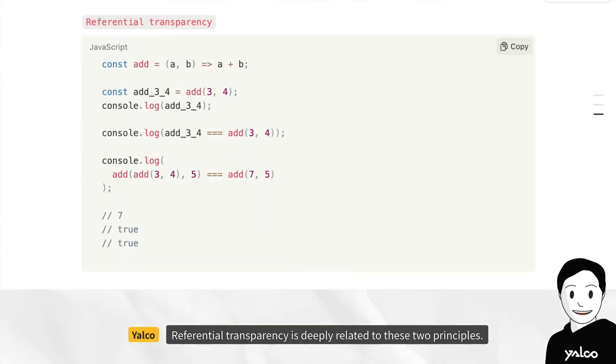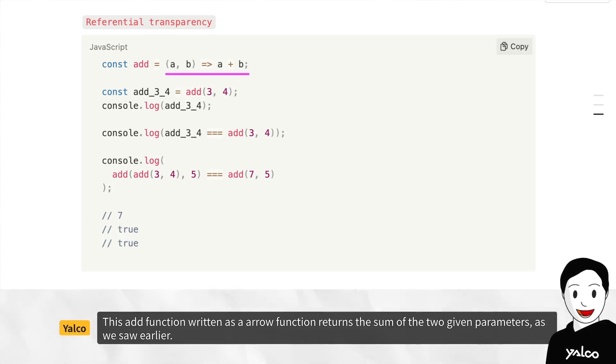Referential transparency is deeply related to these two principles. The call statement of functional code can be replaced by its return value. This add function, written as an arrow function, returns the sum of the two given parameters, as we saw earlier.